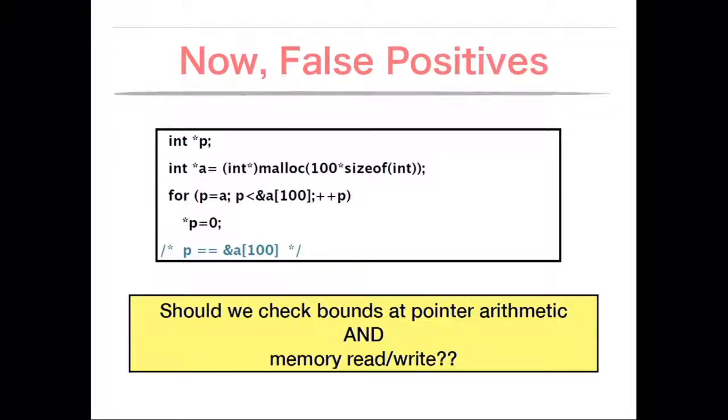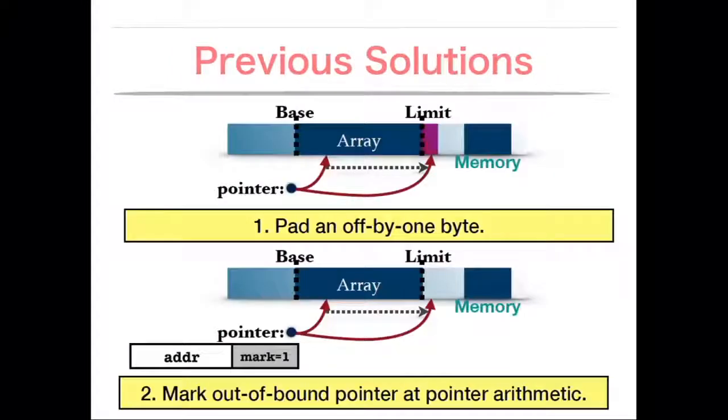If we just perform the runtime checks at the pointer arithmetic, then it may lead to false negative problems because of the off by one byte. Should we check bounds at the pointer arithmetic and the memory read and write? That is too much work and it is going to be more expensive. To avoid that, some approaches pad off by one byte to avoid runtime checks at memory accesses or another one can mark out-of-bound pointer at arithmetic and then keep runtime checks at memory accesses.